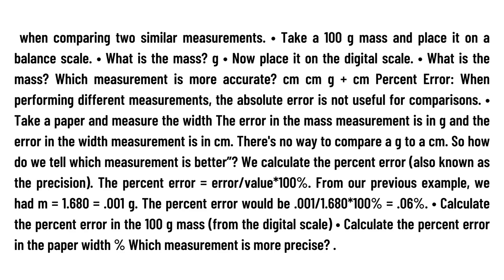When performing different measurements, the absolute error is not useful for comparison. The error in the mass measurement is in grams and the error in the width measurement is in centimeters. There is no way to compare grams to centimeters. So how do we tell which measurement is better? We calculate the percent error, also known as the precision.